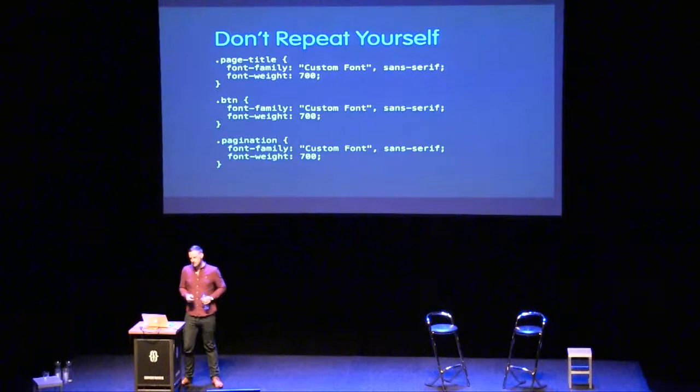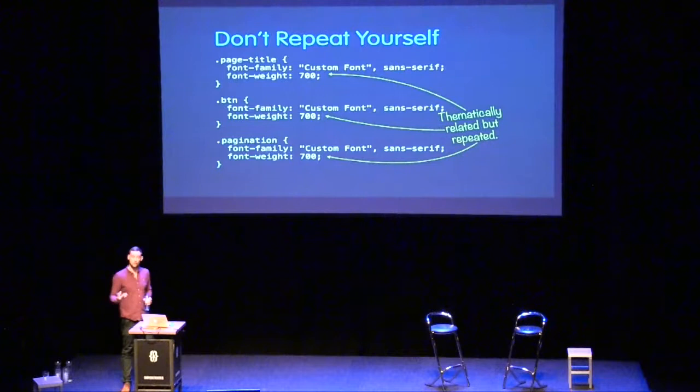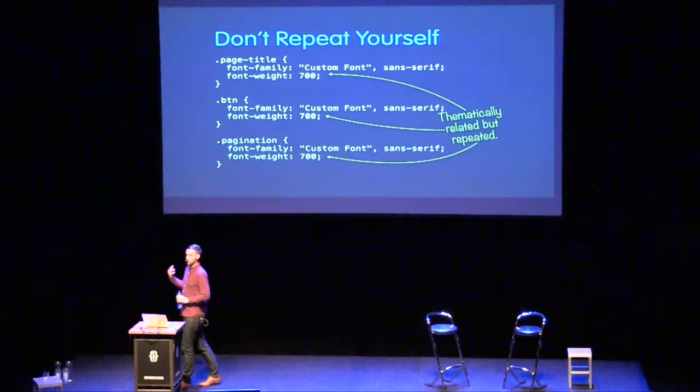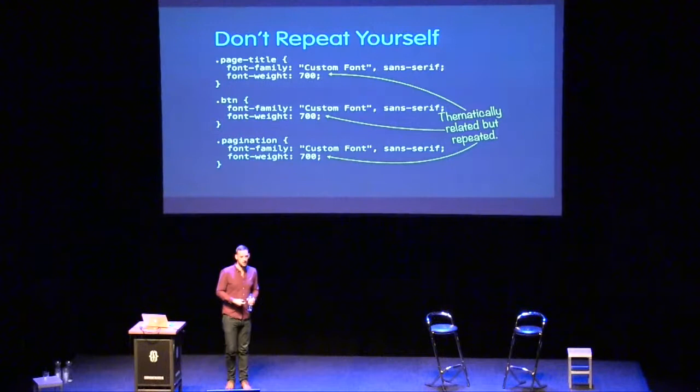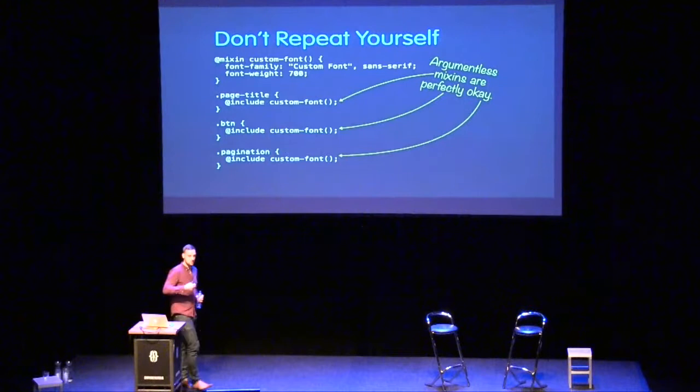Here we have three completely unrelated rule sets — rules that have nothing to do with each other — but they've all got this thematic repetition: whenever we define a certain font family, we have to declare a corresponding font weight. That means if the font family ever changes, we've got quite a large task to go through the project and update 700 to perhaps 500.